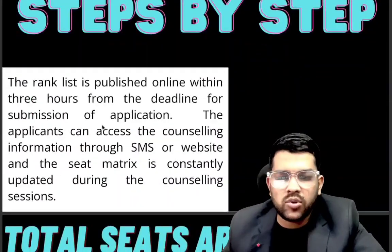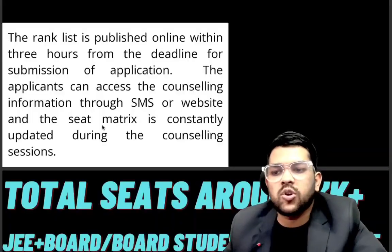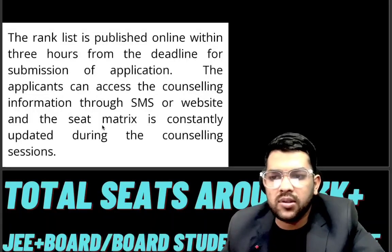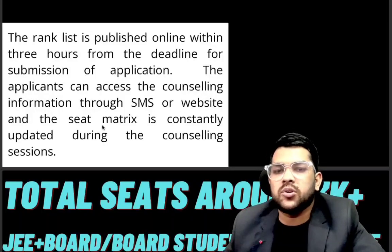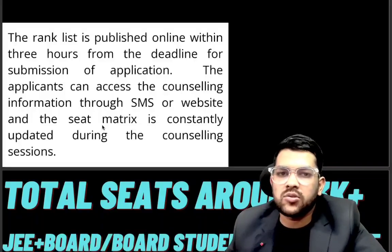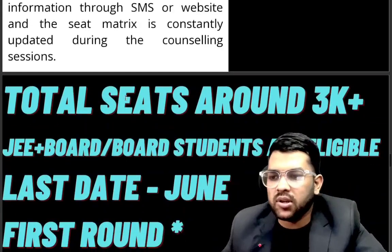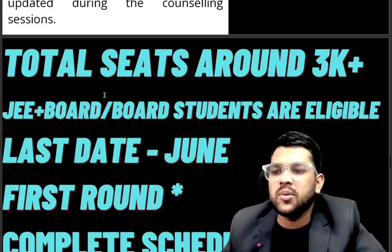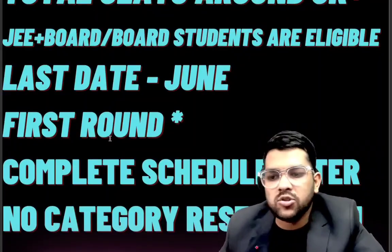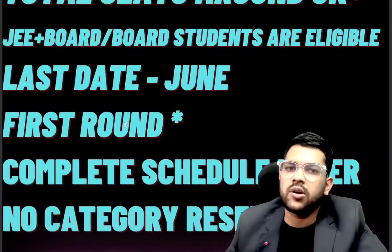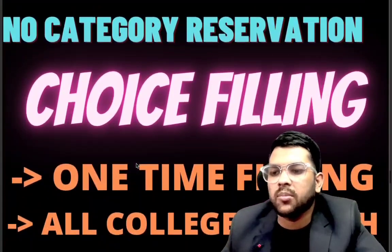The rank list is published once before the deadline, likely up to June for this year. Once you apply, you provide your Class 12 details and JEE score, and a merit rank will be published in June. Counseling will start thereafter. Merit rank is based on the highest score — rank 1 for highest, rank 2 for second, and so on. Total seats are around 3,000. Last date will be in June. No category-wise reservation is available; only home-state or other-state reservation applies.